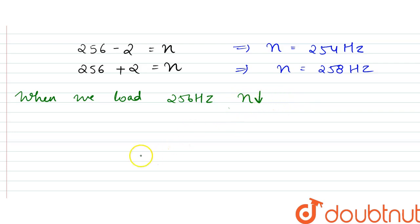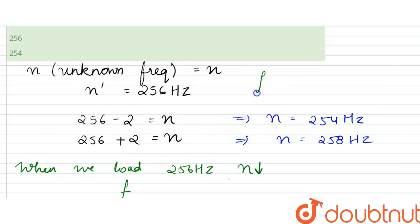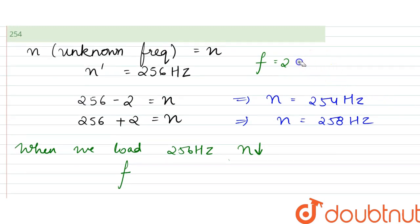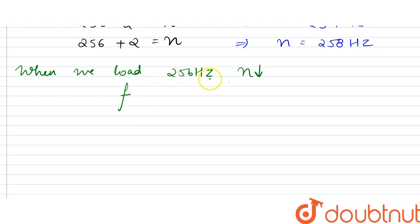Correct, so as n decreases, the beating frequency f here, right - since f was two beats per second, right, or two hertz simply, correct - so if this decreases, f would obviously decrease or f would increase.